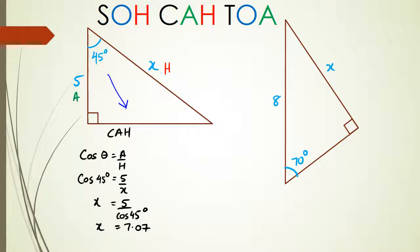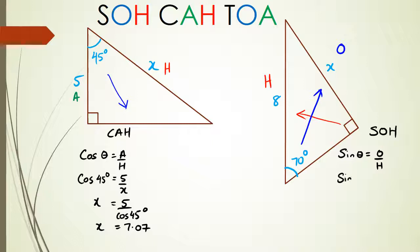In the second example, the second triangle has 70 degrees, x, and 8. The side opposite the right angle is hypotenuse, and the side opposite the angle is opposite. So I've got O and H, which means I'm going to use the sine rule — SOH. So sine 70 equals x divided by 8, which means 8 times sine 70 equals x, giving x equal to 7.52.